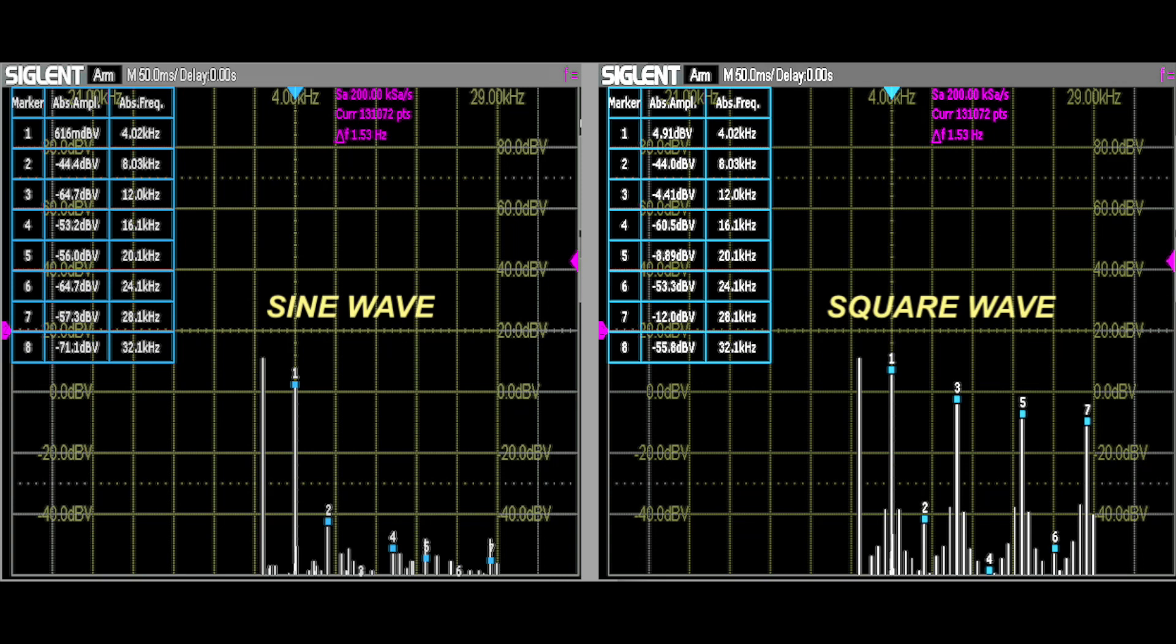In this case, we can see most harmonics, both even numbered, so the second, fourth, sixth harmonic, and odd numbered, third, fifth, and seventh harmonic. We can see that these ones are present.